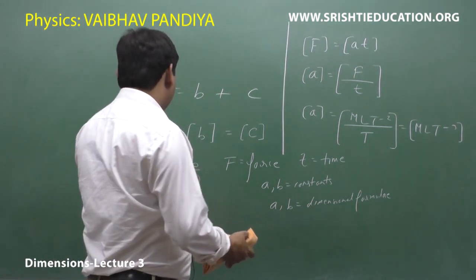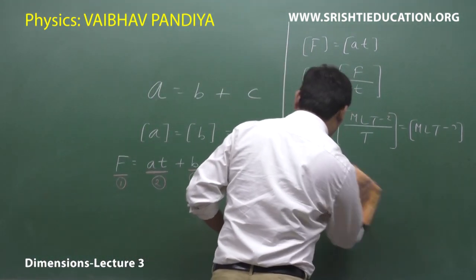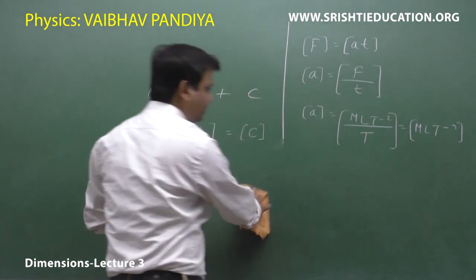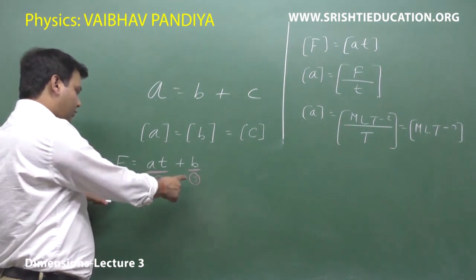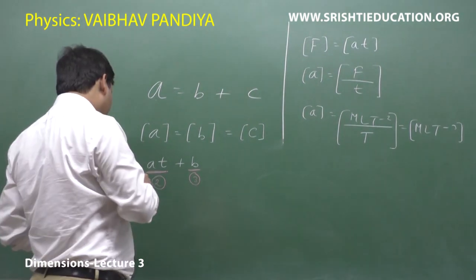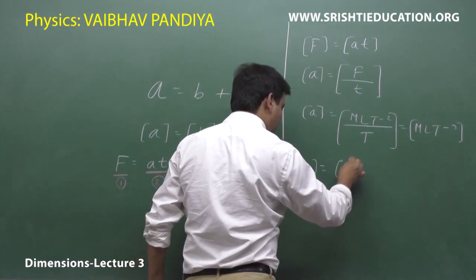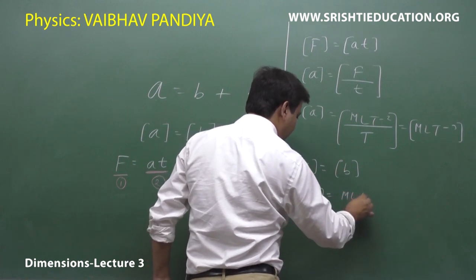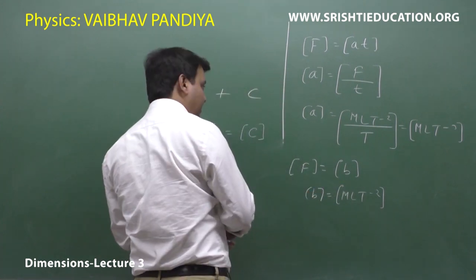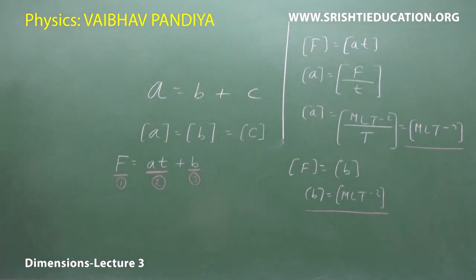Now to find the dimensional formula of B in the equation F equals A times T plus B: we can equate the first and third terms. So F equals B, meaning B has the same dimensional formula as F, which is MLT⁻². So the dimensional formula of A is MLT⁻³ and the dimensional formula of B is MLT⁻².